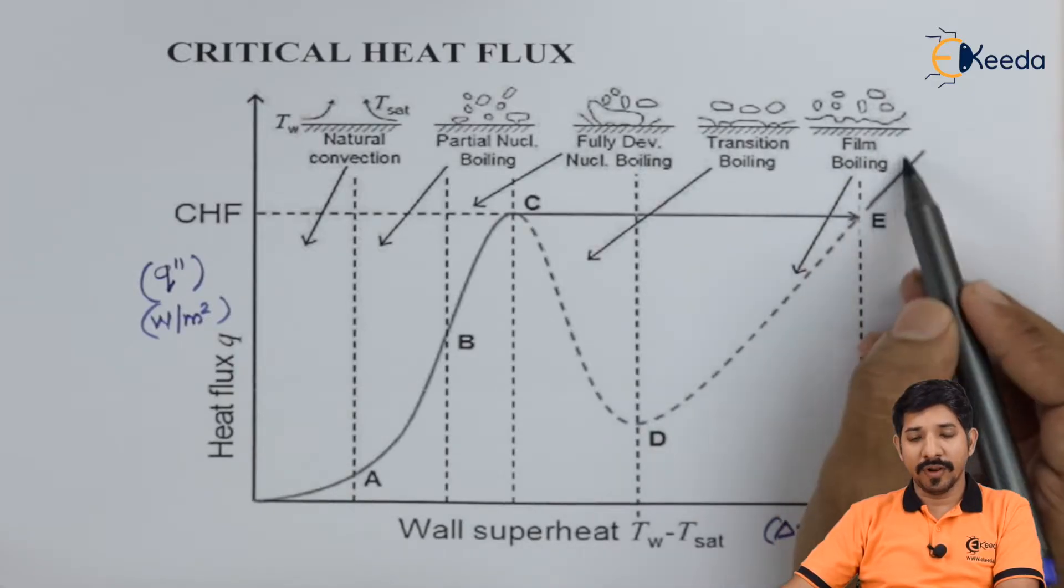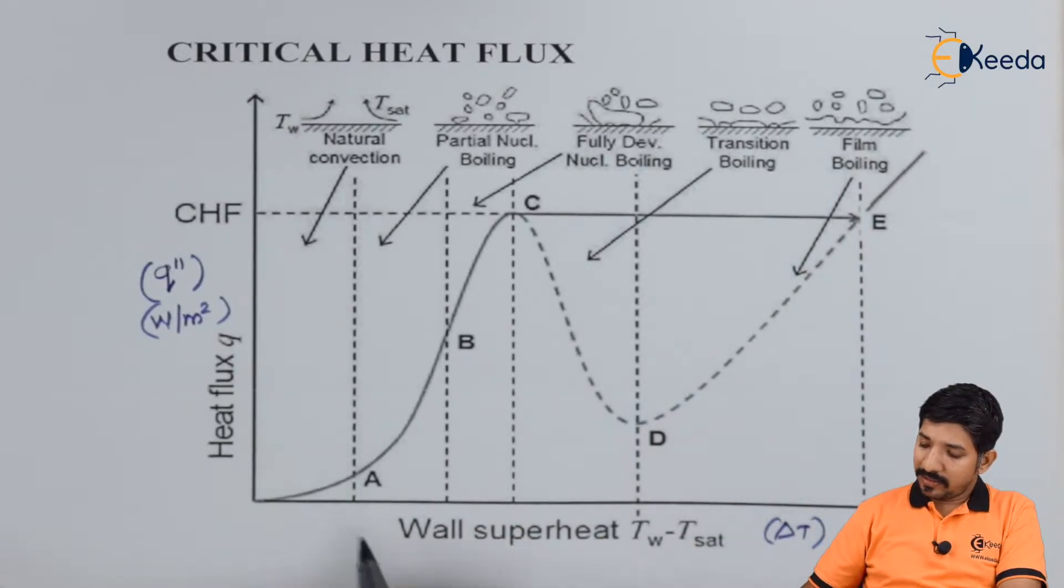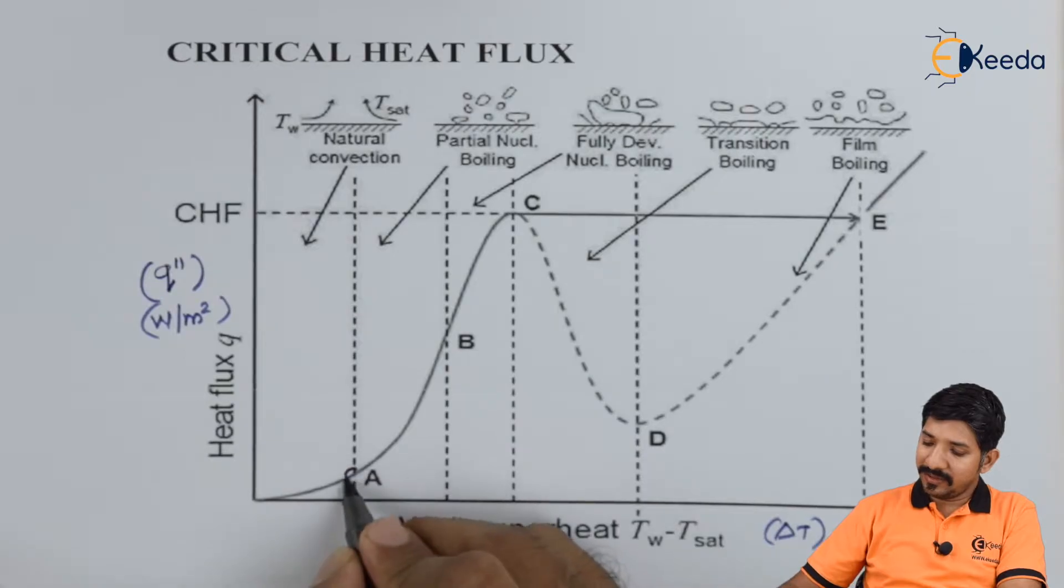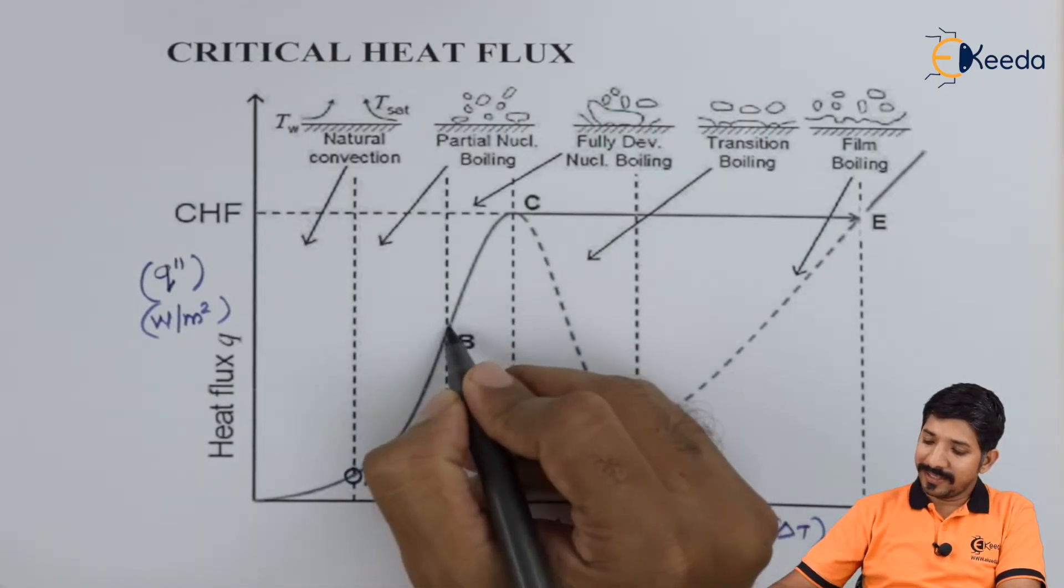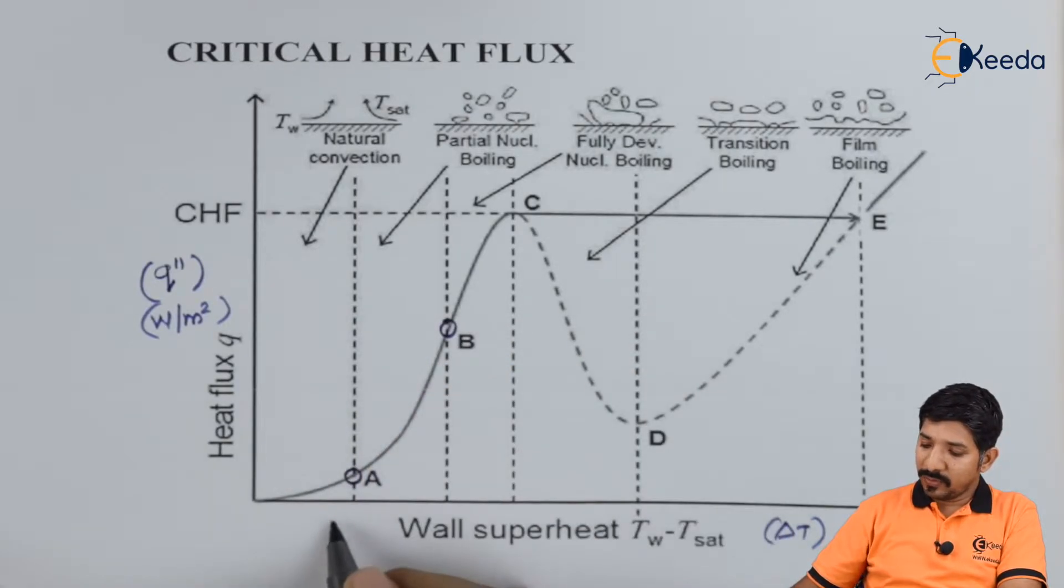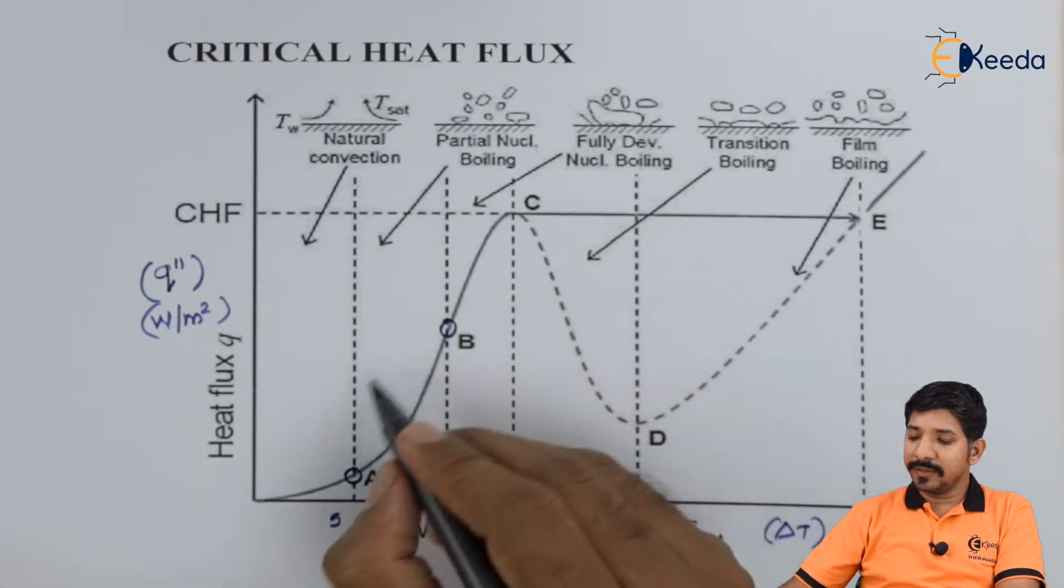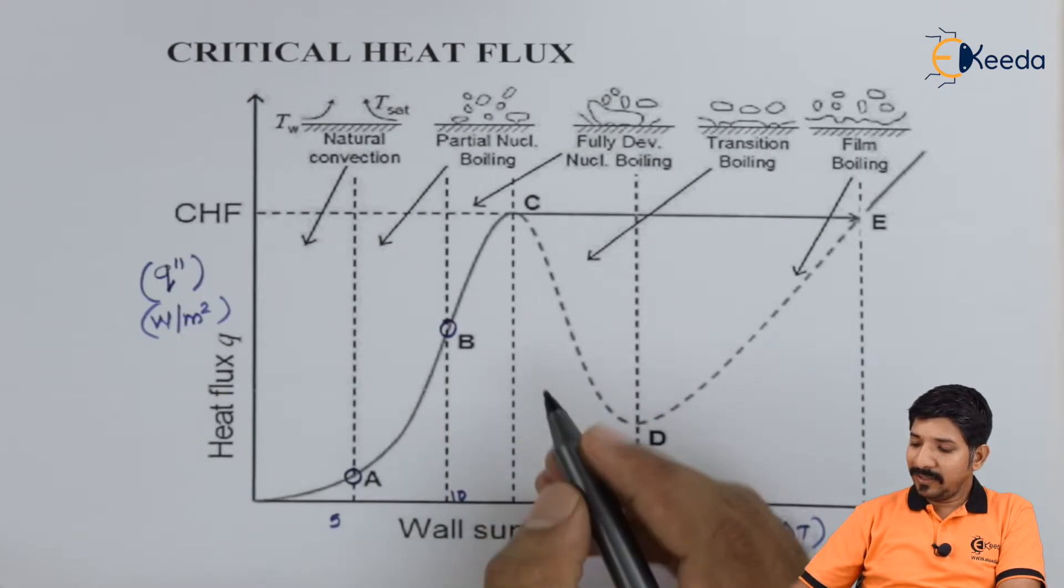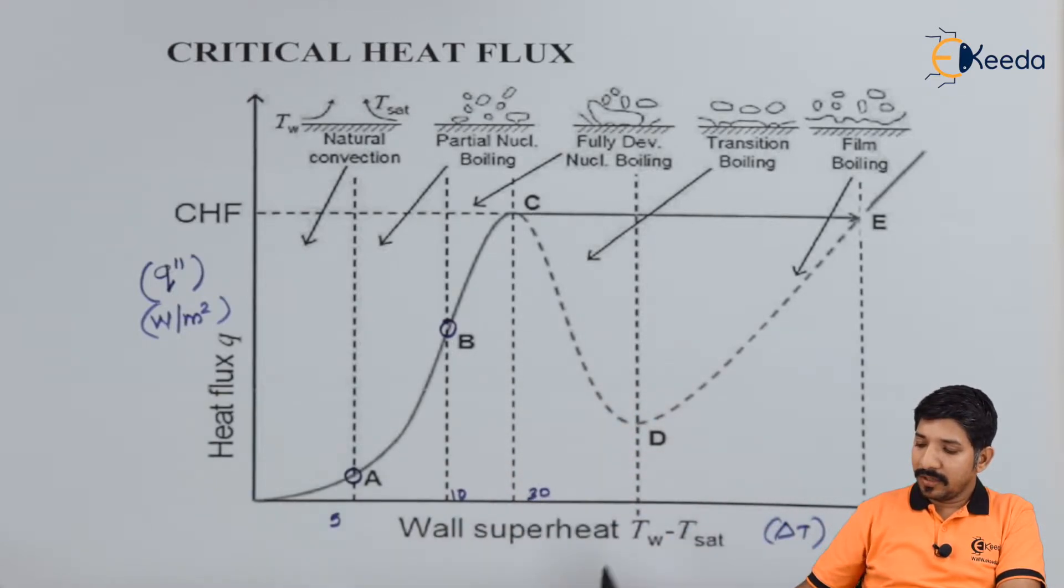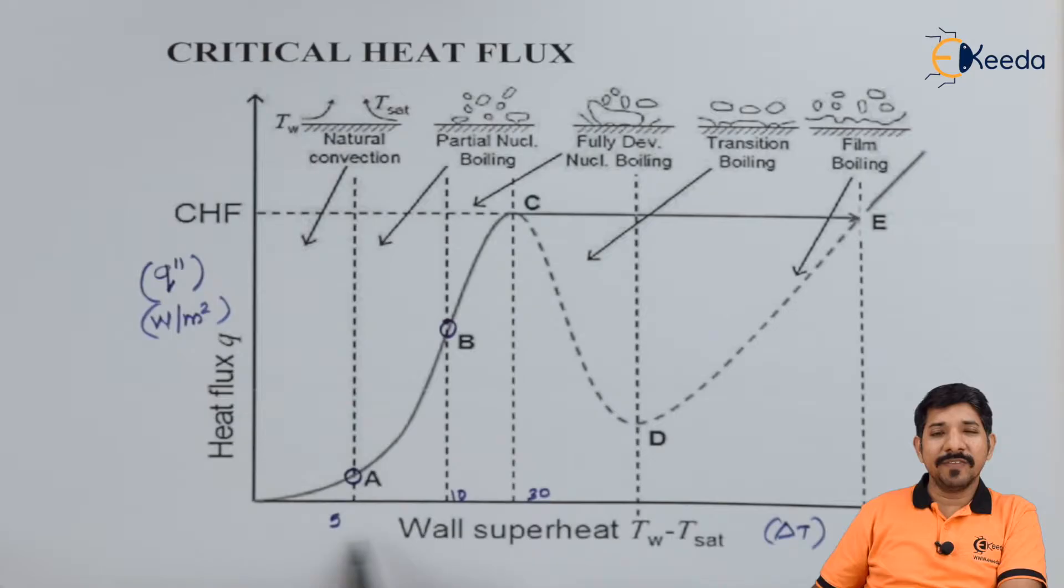Now if the temperature is between, let's say, 5 to 10 degrees Celsius, then we end up into partial nuclear boiling. Now between 10 to 30, this is given when the fluid is water and the wire that we have used is the platinum wire.